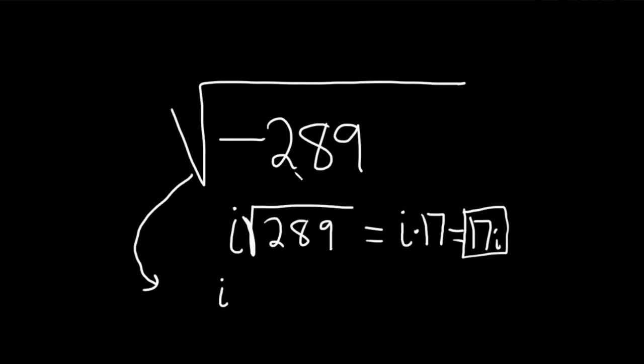And then you say the square root of 289 is 17. So this is 17i. And that's the answer.